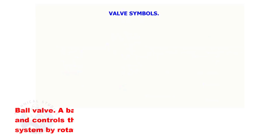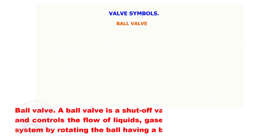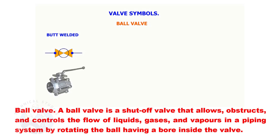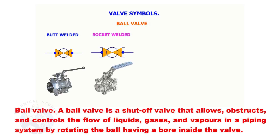Ball valve. A ball valve is a shutoff valve that allows, obstructs, and controls the flow of liquids, gases, and vapors in a piping system by rotating the ball having a bore inside the valve.